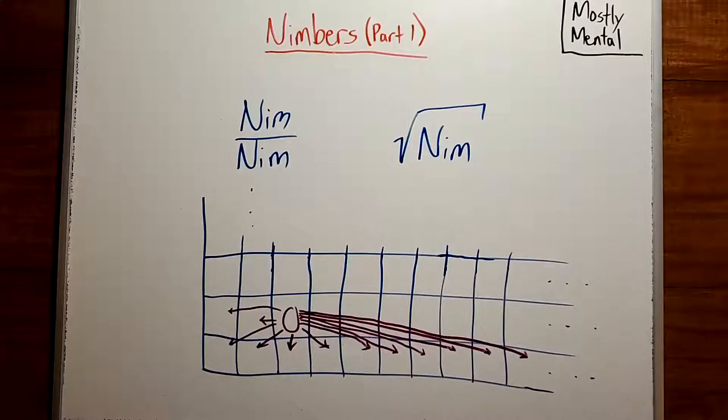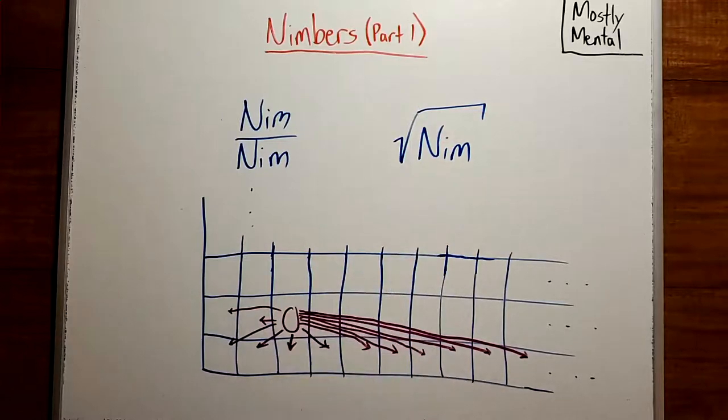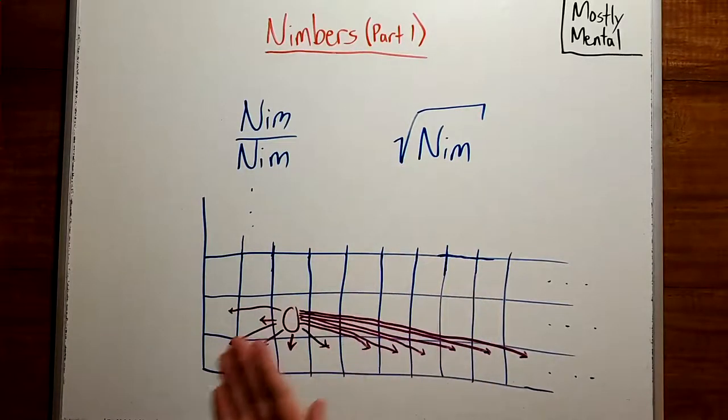We've made a good first foray into the world of nim numbers, but as the title suggests, there's a whole lot more left to explore. Can we divide nim numbers? Do algebra with them? What happens if we don't limit ourselves to finite games? Join me next time as we find out.